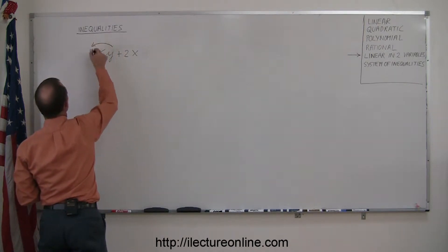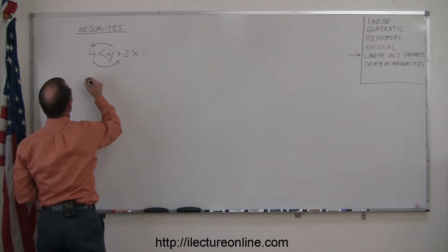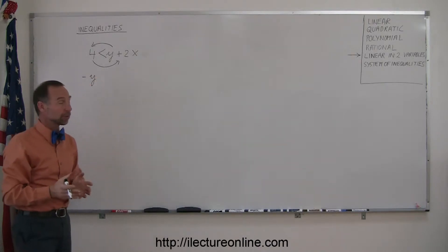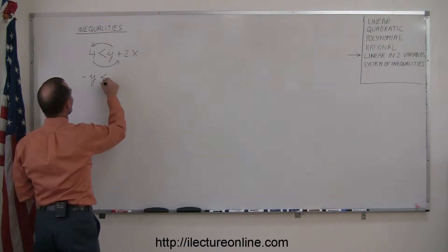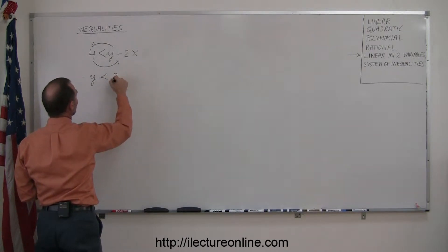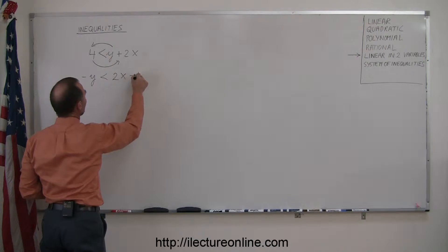I'm going to move the y over here and the 4 this way. So this becomes a minus y. Just like with an equation, when you cross the inequality sign, the sign changes. So you get minus y is less than, write the 2x first, and then when the 4 goes across, it becomes minus 4.